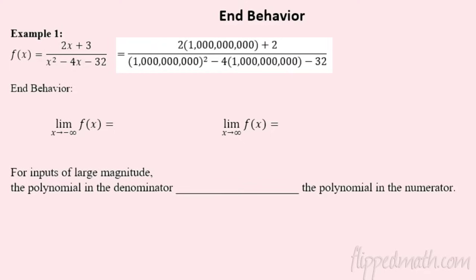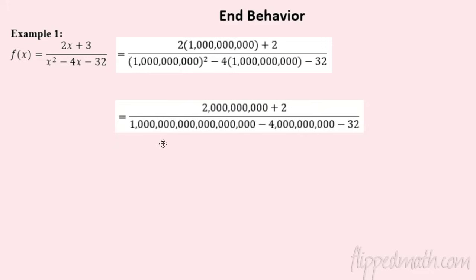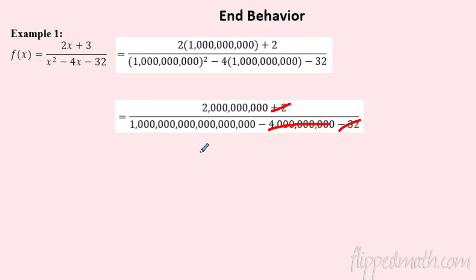When I put a billion in for x, two times a billion is two billion, and then look at this — billion squared turns into a billion billions, this massive number. So what's happening? Look at the top: if you have two billion dollars, does it matter if you had two dollars extra? No — that's chump change. Same thing on the bottom: does it matter if you have negative 32? No. This number, a billion billions, is so big you don't care if you lose four billion.